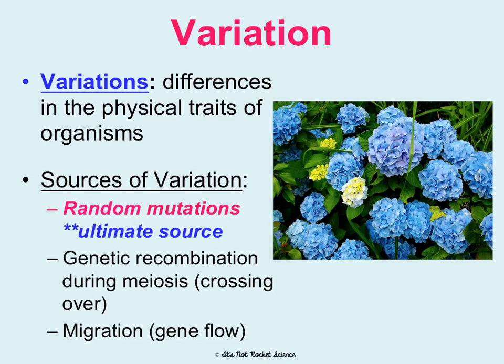Random mutations are the ultimate source because asexual reproducers like bacteria don't do meiosis, and migration doesn't affect them because they aren't sexually reproducing — they only reproduce on their own. That's why we say random mutations are the ultimate source: they affect all species and all organisms regardless of their mode of reproduction.